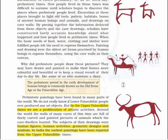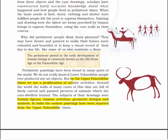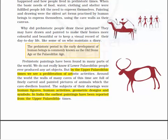The prehistoric period and the early development of human beings is commonly known as the Old Stone Age or the Paleolithic Age. Prehistoric paintings have been found in many parts of the world, and we do not really know if lower Paleolithic people ever produced any art objects.